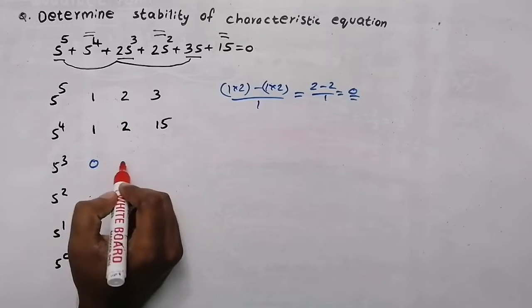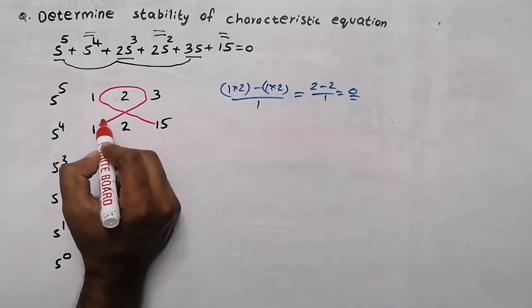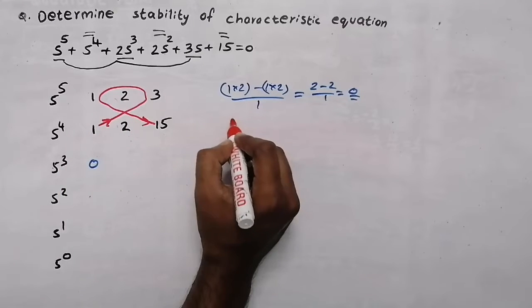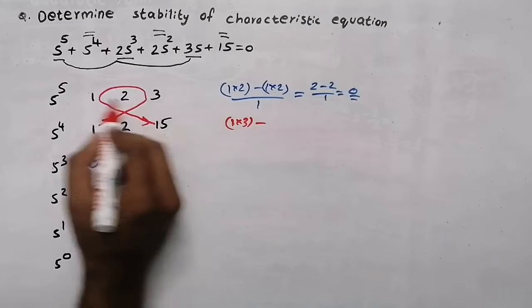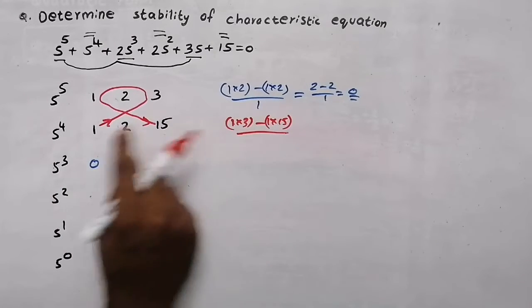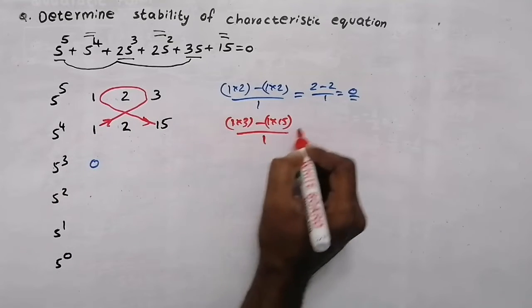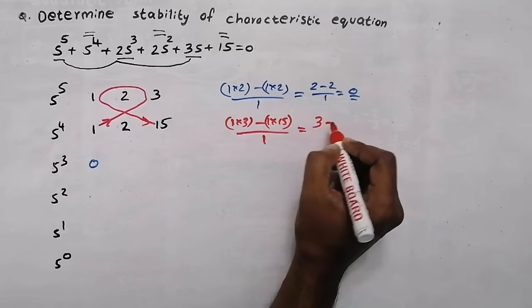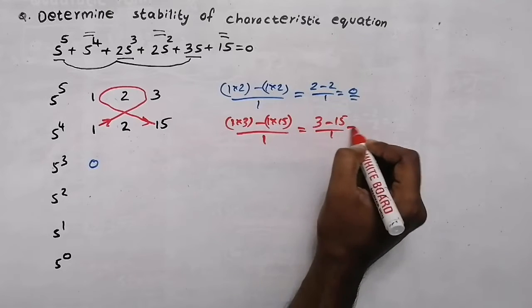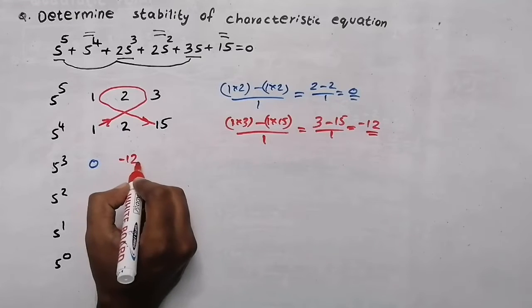Now, in order to get the second element, we will do the multiplication starting from 1 and ending here. So, 1 into 3 minus 1 into 15, divided by the starting element which is 1. So, 1 into 3 is 3 minus 1 into 15 is minus 15, divided by 1. So 3 minus 15 — it will be minus 12. So this value will be minus 12.